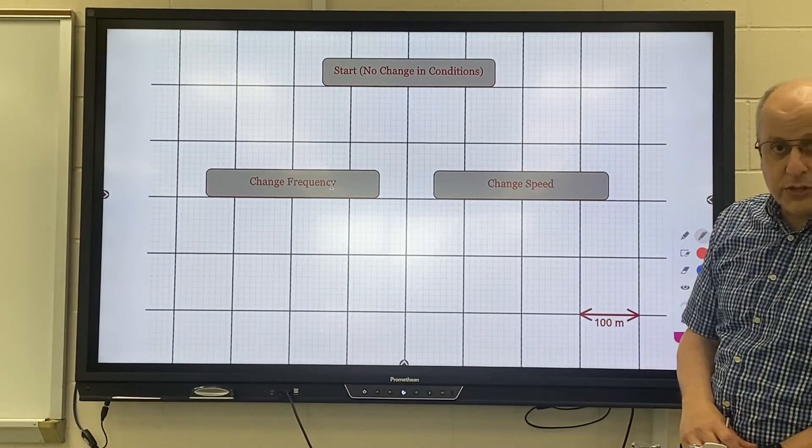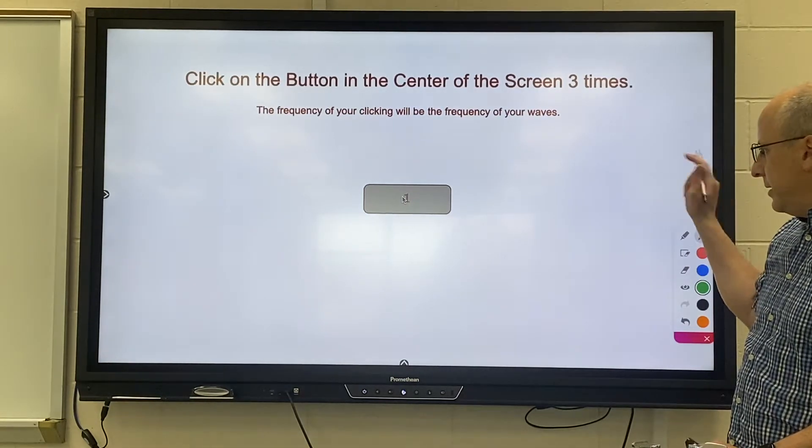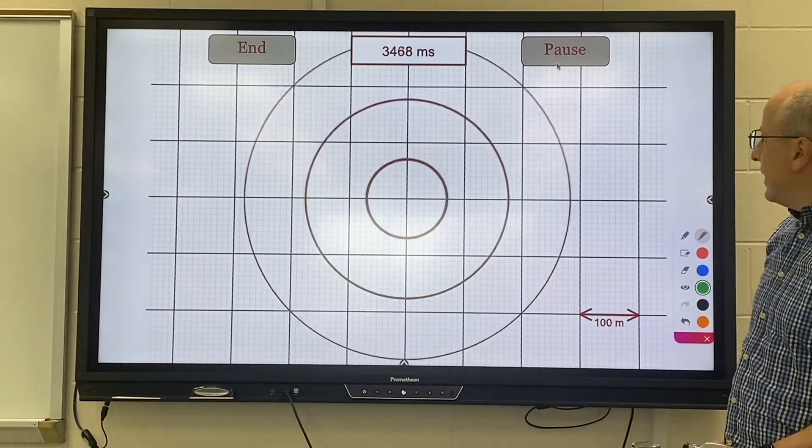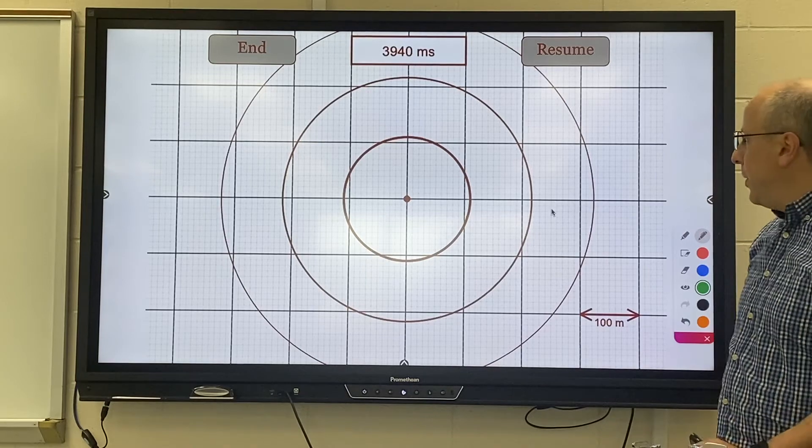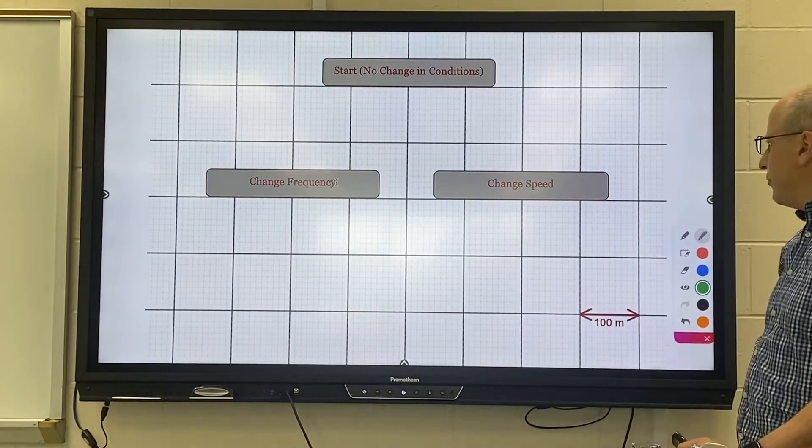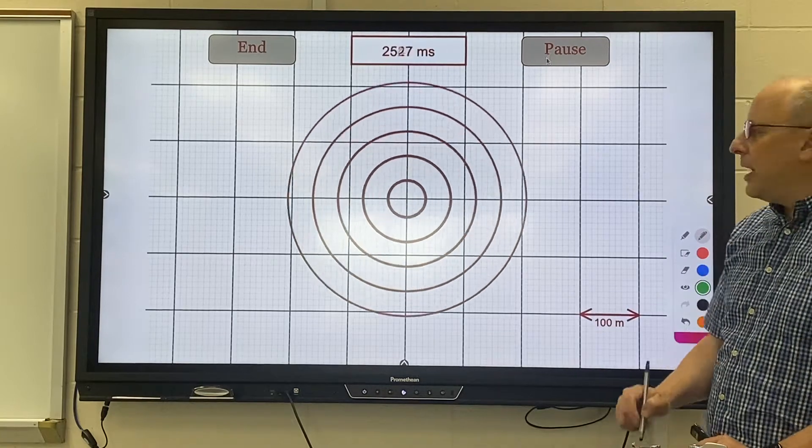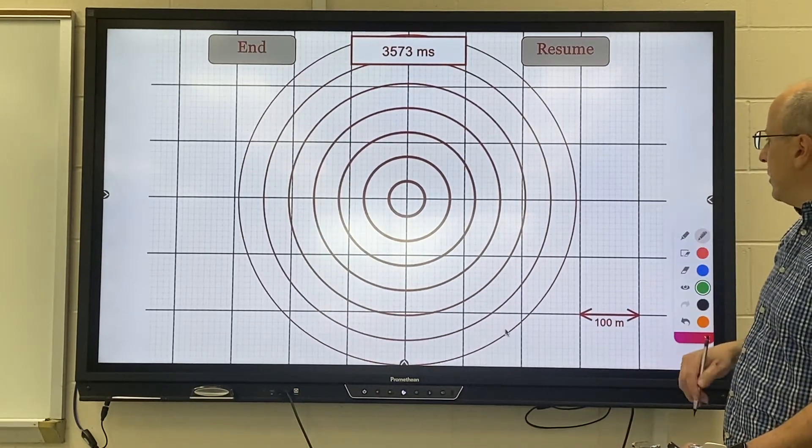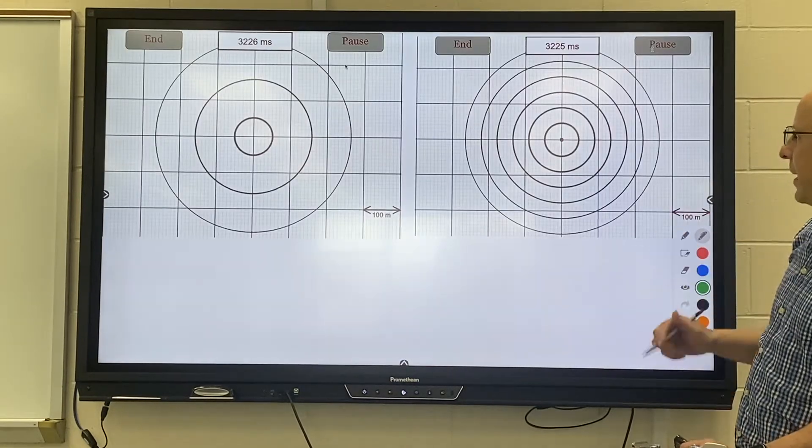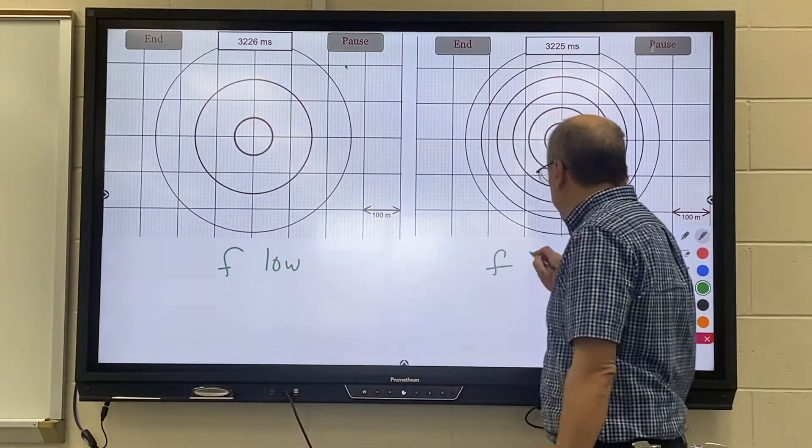So let's take a look. In the first example I'm going to modestly create a frequency. I then have my wave created with that exact same frequency and when I'm done I'm going to pause it. You'll notice that the waves are pretty far apart, almost a hundred meters. Now I'm going to make the waves happen much quicker. I clicked with a much higher frequency. You'll now notice that the waves are only about 40 meters apart.